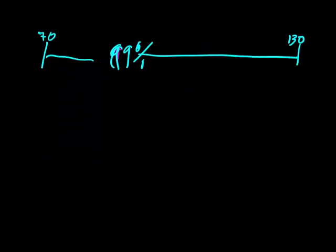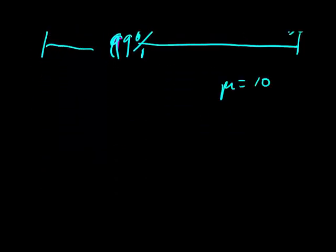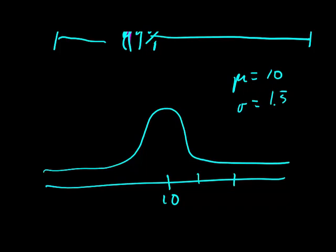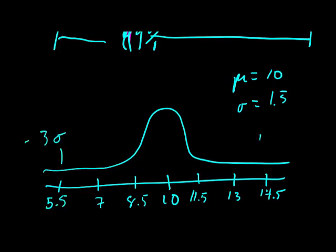One more quick example. If mu is equal to 10 and sigma is equal to 1.5, let's draw this one. Line, 10 in the middle, normal curve around the outside, one sigma, two sigma, three sigma to the right, one sigma, two sigma, three sigma to the left. This would be 11.5, this would be 13, this is 14.5. Going the other way, this is 8.5, this is 7, and this would be 5.5. Three sigma, negative three sigma, positive three sigma. Hope that helps. We'll see you next time.